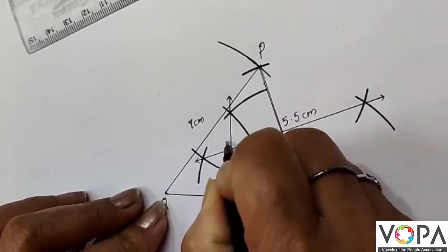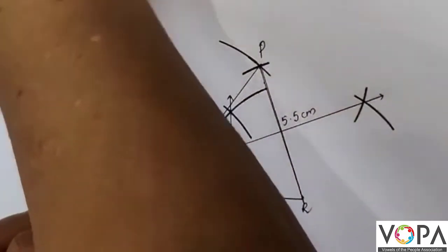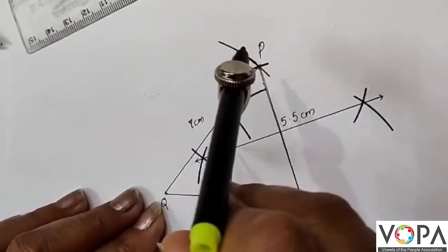Here this will be the circumcenter - the center of the circle which we are going to draw. Then what will be the radius?